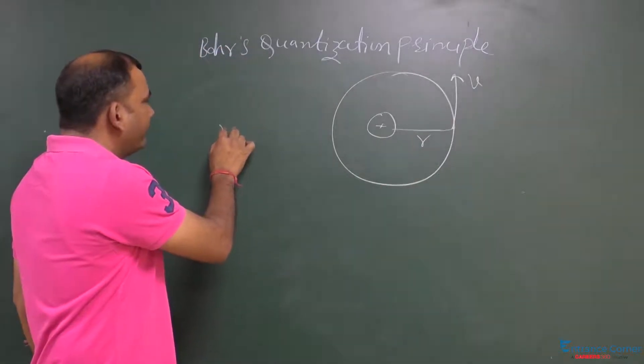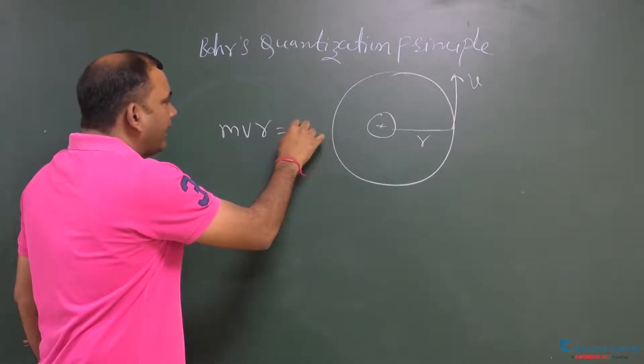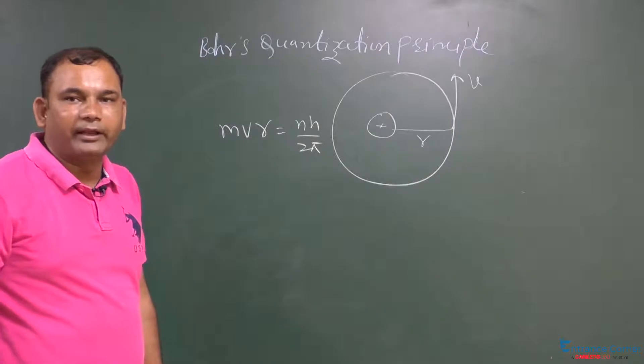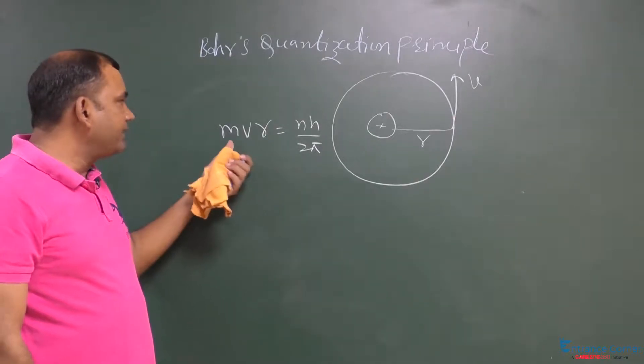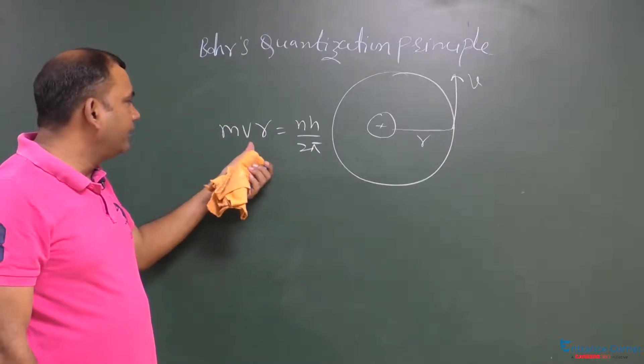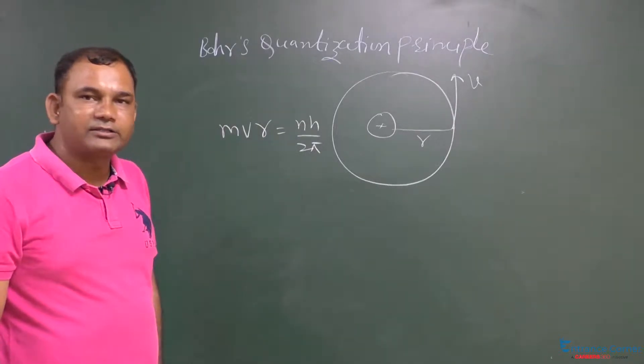So, we can write m v r equals n h upon 2π. Now, what is m? m is the mass of the electron, v is the speed of the electron, and r is the radius of the electron.